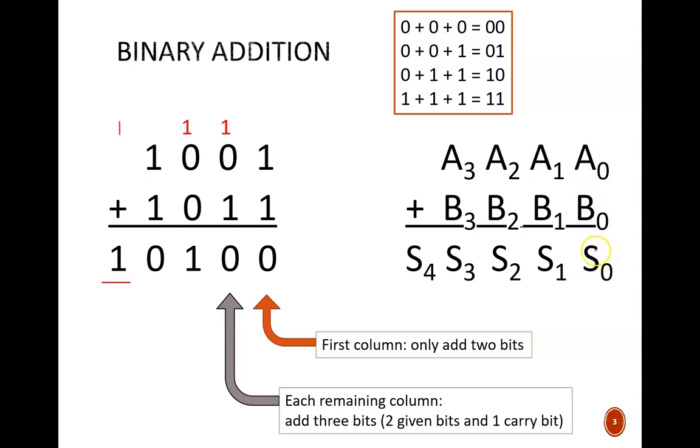The subscripts next to each symbol indicate the bit position, starting from 0 at the least significant bit, and increasing by 1 as we move to the left. To know the weight of each of these bit positions, simply take 2 and raise it to the subscript value. So, for example, a sub 3 would carry a weight of 2 to the third, or 8.